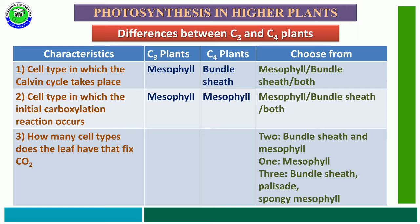The third characteristic feature is how many cell types in the leaf fix carbon dioxide. The options are: 2 — bundle sheath and mesophyll; 1 — mesophyll; or 3 — bundle sheath, palisade, spongy, and mesophyll. The correct answer is: in C3 plants, only one cell type participates in CO2 fixation — mesophyll. But in C4 plants, two types of cells participate — mesophyll and bundle sheath cells.